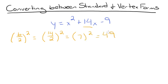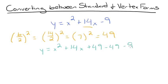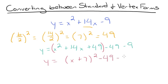Now add and subtract this value after the x term. So we'll have y equals x squared plus 14x plus 49 minus 49 minus 9. This trinomial factors to x plus 7 squared, so we'll have y equals x plus 7 squared minus 49 minus 9. Remember, the point of completing the square is to get it to factor into something that looks like this.